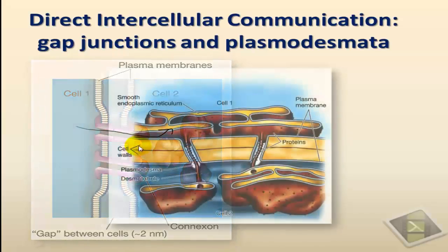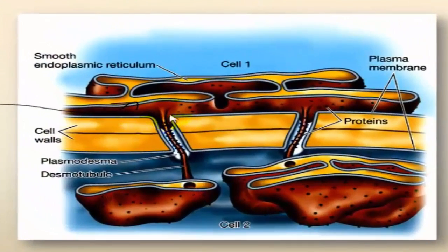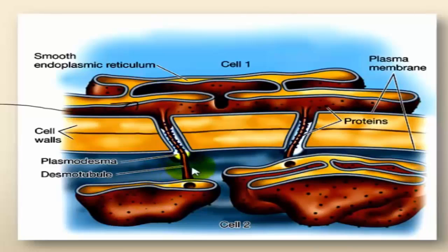The other example is plasmodesmata in plant cells. Plasmodesmata are channels or direct links between plant cells, involving tubules that link the endoplasmic reticulum of one cell to that of another. These tubes are known as desmotubules, and through them, molecules found in one cytoplasm can quickly diffuse and be transferred to the cytoplasm of another cell.